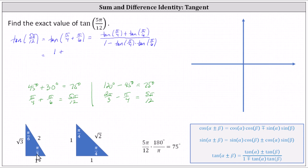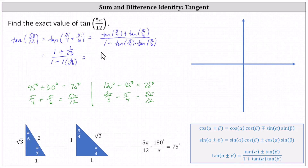Tangent of pi divided by six also equals the ratio of opposite to adjacent, which is one divided by square root three. In the denominator, we have one minus the product of tangent of pi divided by four, which is one, and tangent of pi divided by six, which is one divided by square root three. Simplifying, we have one plus one divided by square root three, all divided by one minus one divided by square root three.